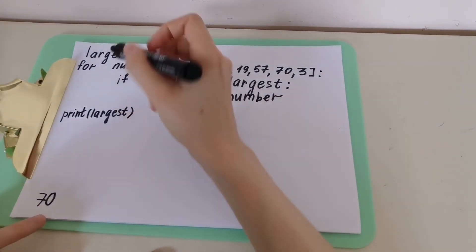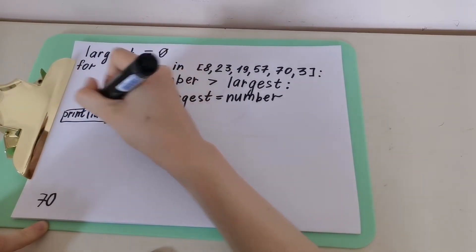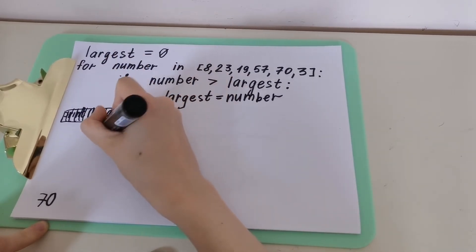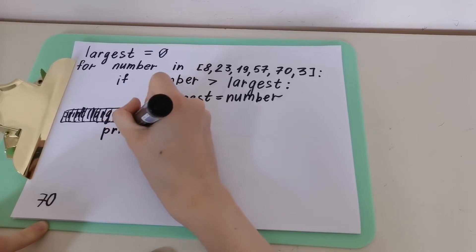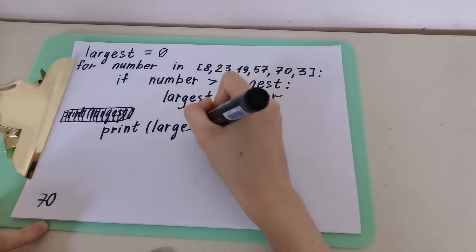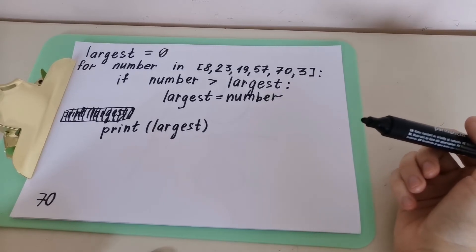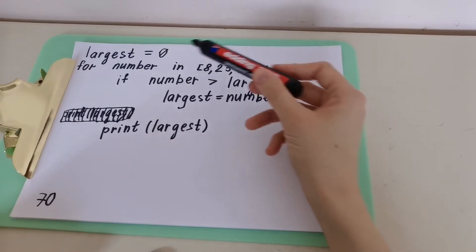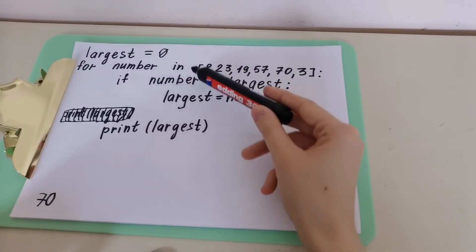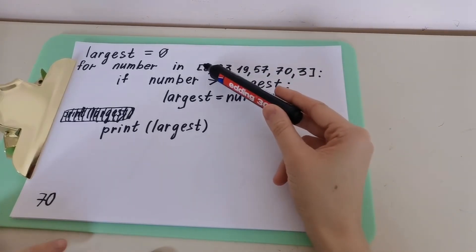Now let's move the print line to the same level as the `if` statement so we can see how it works step by step. We write `print largest` at the `if` level. So first, Python sets `largest` to zero, then the loop checks every single number in the list.